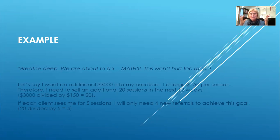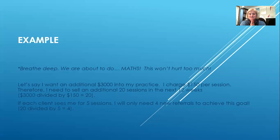You're going to sit there and go: 20 brand new clients. That's only if you see a client once — then yes, you're going to need 20 brand new clients. But most of us don't see a client once. So if each client sees me on average for five sessions, then I'm only going to need four new clients — four new referrals to achieve this goal. How did I work that out? I need 20 sessions divided by people staying with me for five, which means I only need four. That means I need just over one new client a month in the next 12 weeks. When you start breaking it down like this, hasn't it become so much more doable?